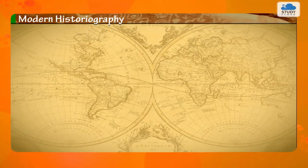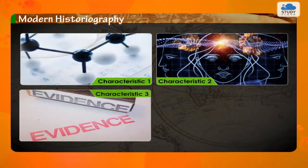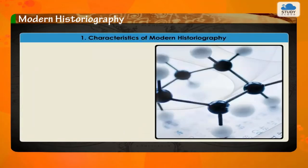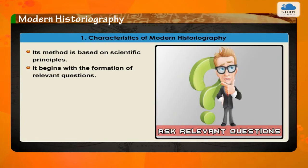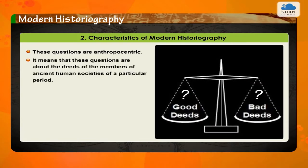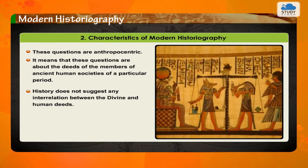Modern historiography has four main characteristics. One, its method is based on scientific principles — it begins with the formation of relevant questions. Two, these questions are anthropocentric, meaning they are about the deeds of the members of ancient human societies of a particular period. History does not suggest any interrelation between the divine and human deeds.